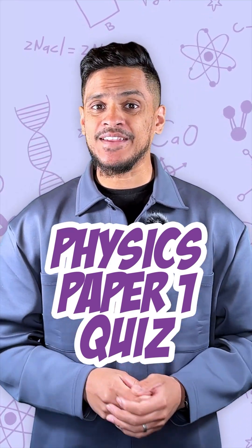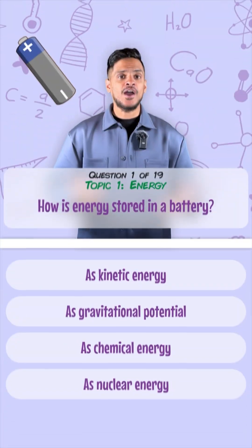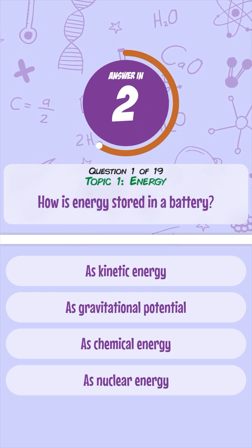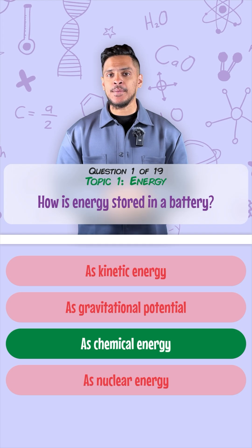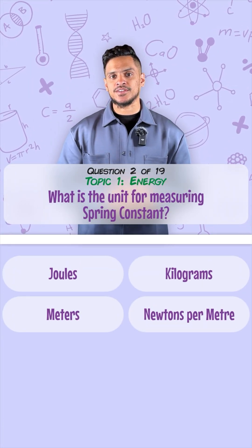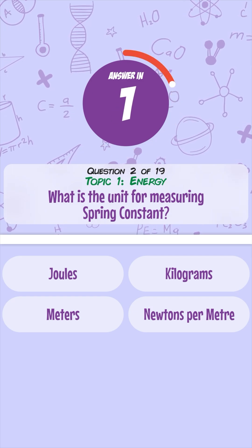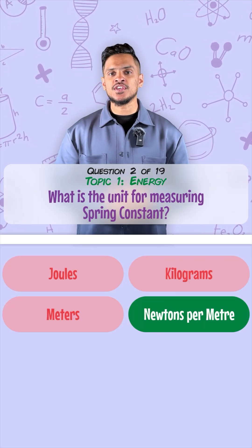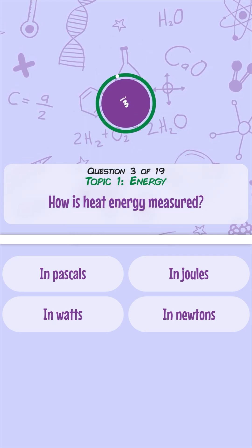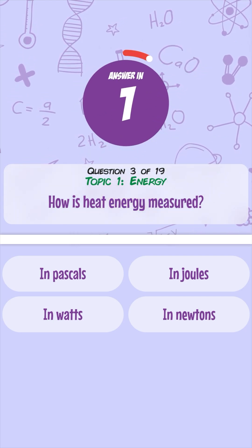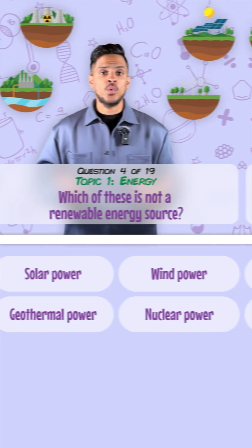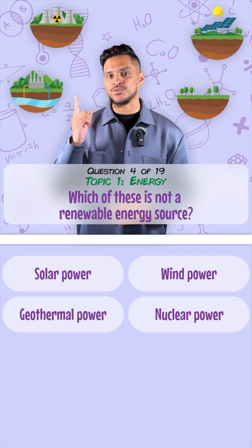Here's a quiz covering every topic in physics paper one. How is energy stored in a battery? It's stored as chemical energy. What's the unit for measuring spring constant? That's measured in newtons per meter. How is heat energy measured? Any type of energy is always measured in joules.